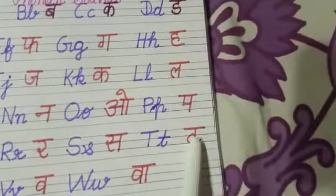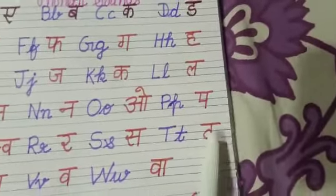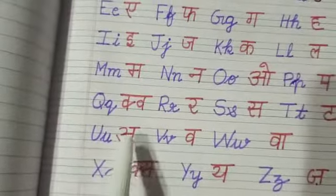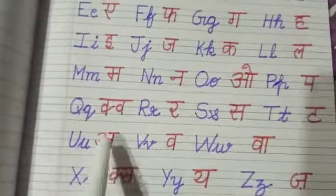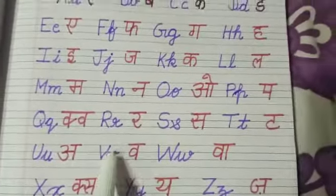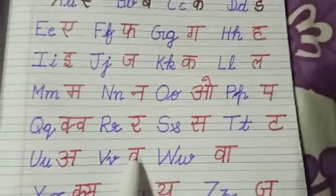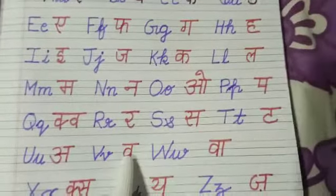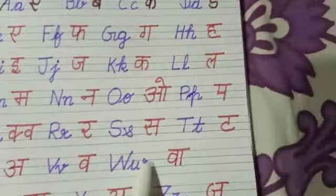T, ta, Train. Ta, ta, ta. U, a, Umbrella. A, a, a. V, wa, Van. Wa, wa, wa.